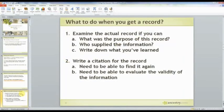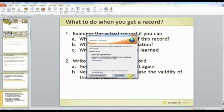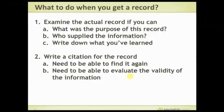So what do you do when you get a record? You examine the actual record if you can. An index of birth certificates is okay, but the actual birth certificate is better. Then you ask yourself: what was the purpose of this record? Who supplied the information? Think about a census record — it was used to enumerate the number of people in a district to determine congressional allocation. It was not done for genealogical purposes, and it was not recorded to determine ages accurately. So you have to keep that in mind.